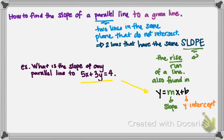So the first thing that we want to notice is that this form here, 5x plus 3y equals 4, this form here is not the same as that form over here. And if we can just get it into that form then we'll be a lot better off. So let's change that form.